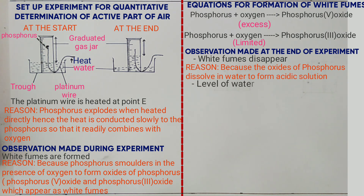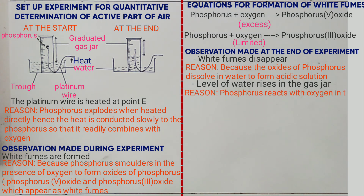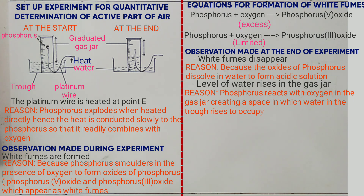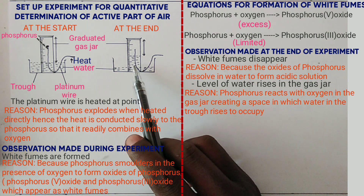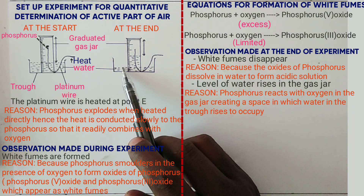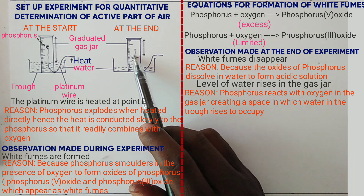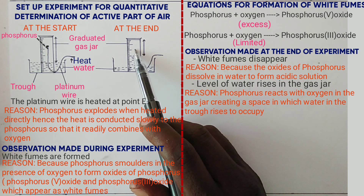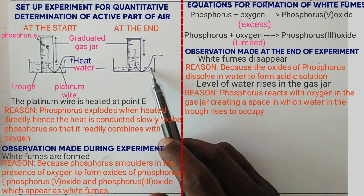Level of water rises in the gas jar. Reason: phosphorus reacts with oxygen in the gas jar, creating a space in which water in the trough rises to occupy. At the end of the experiment, water drops in the trough and rises inside the gas jar. The phosphorus is no longer present and the white fumes are gone. The solution formed inside is acidic — made of phosphoric(V) acid and phosphoric(III) acid.